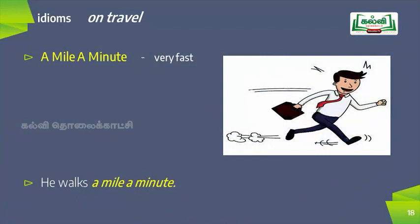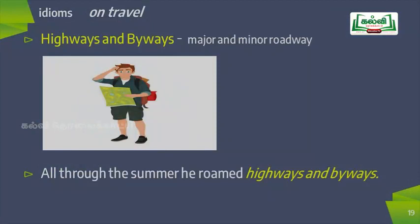The next travel idiom is 'a mile a minute,' meaning very fast. Example: 'He walks a mile a minute' — he walks very fast. Moving on, 'highways and byways' means major and minor roadways. Example: 'All through the summer he roamed highways and byways.'